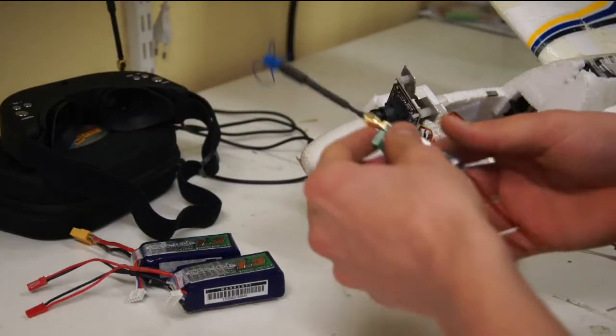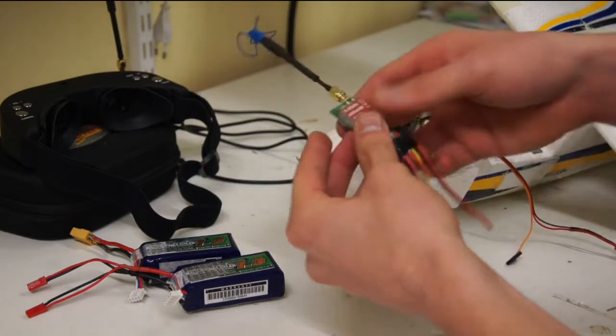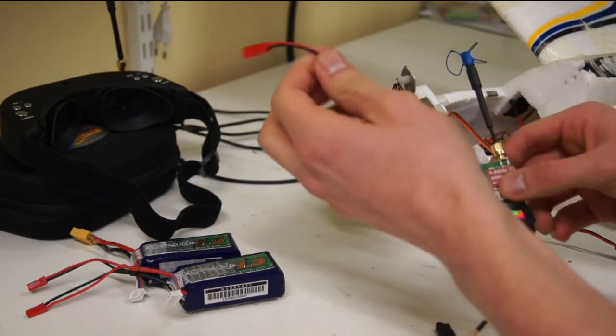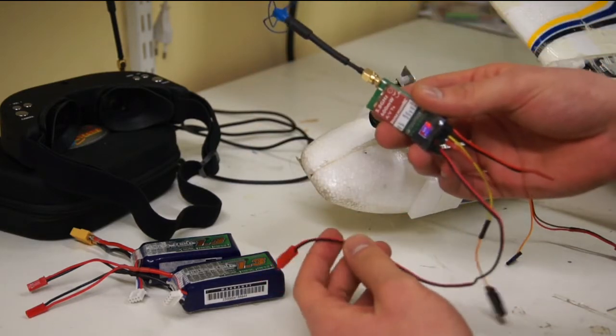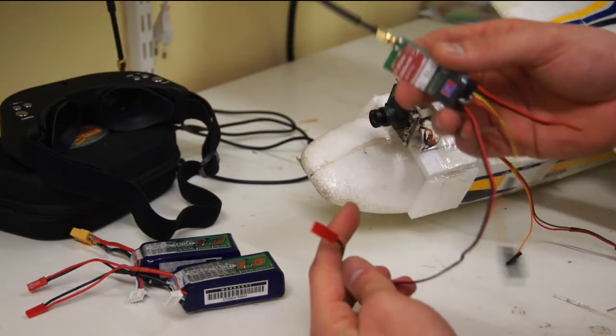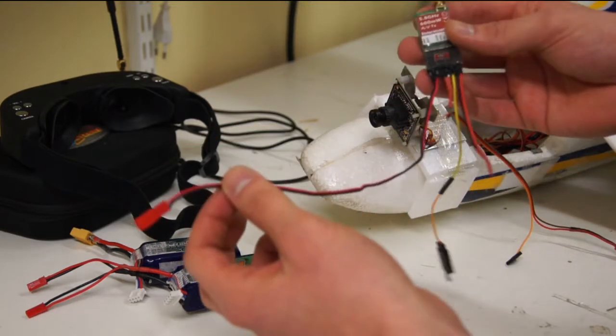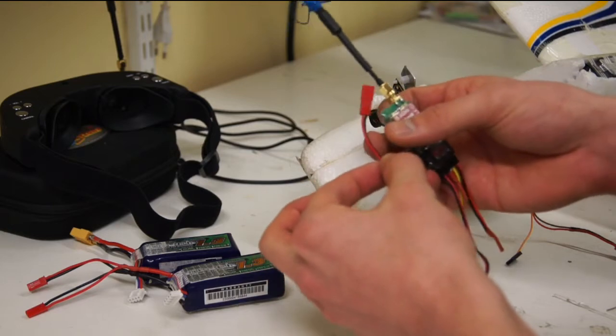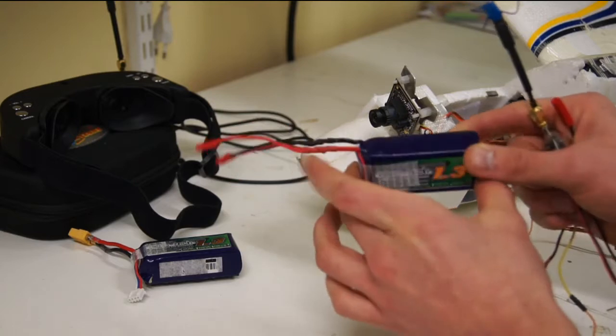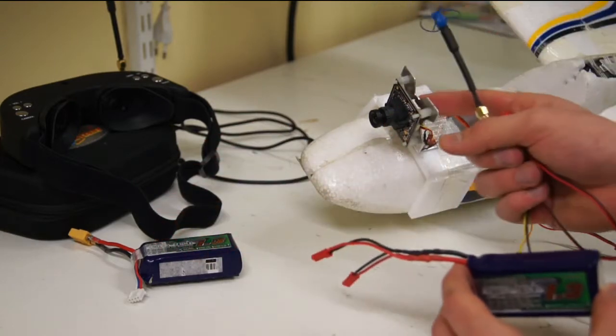Alright, so this is probably as easy as it gets. All you have to do is use the standard power cable. Now this video transmitter operates from everything from a 2-cell to I believe a 6-cell. So it has a wide range of voltage, which is super nice because now we can use a 3-cell for both the video transmitter and the camera.